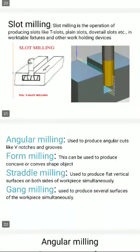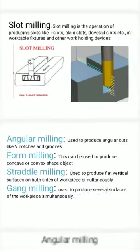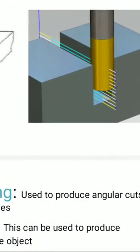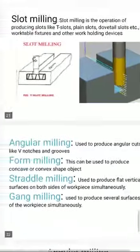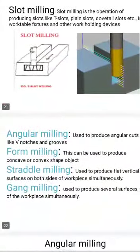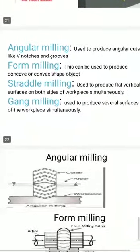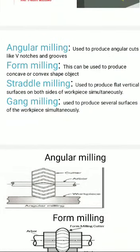Slot milling. As the name indicates, slot milling means whenever you want slots — maybe key slots or plane slots — at that time you have to use slot milling operation. This is the final slot on the workpiece. Similarly, angular milling, form milling, straddle milling, and gang milling — these can be studied one by one.